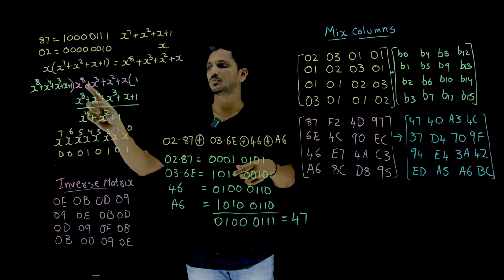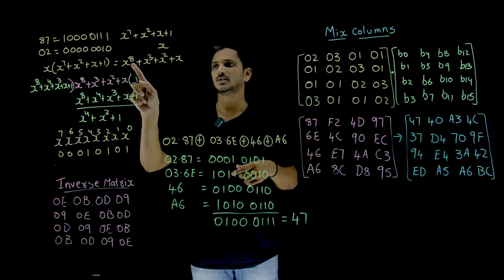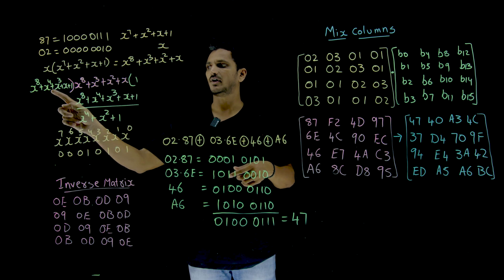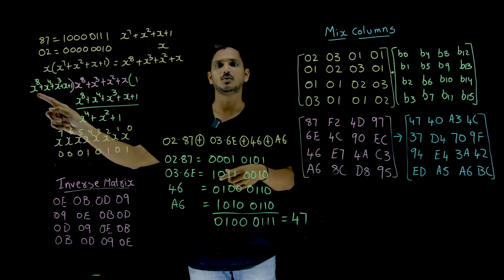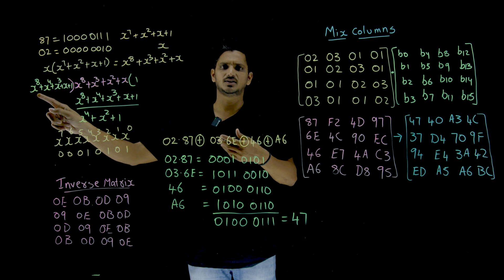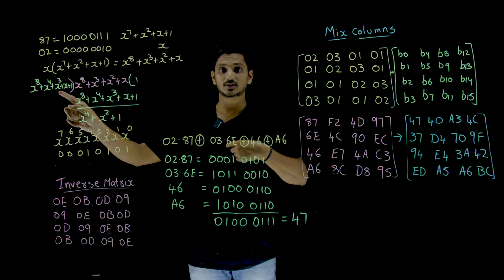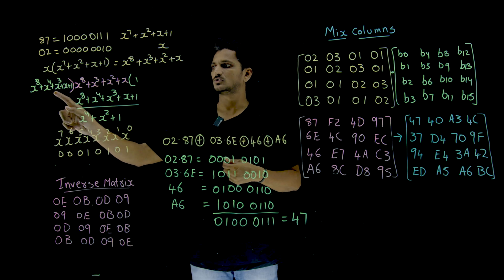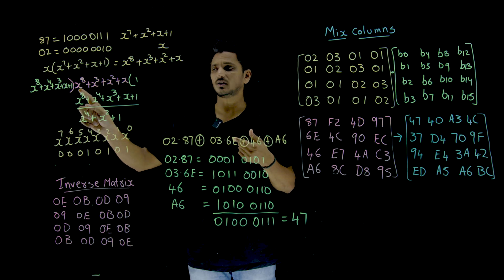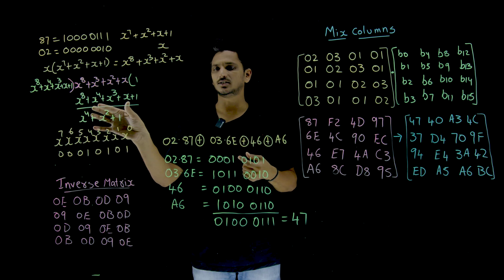The irreducible polynomial X power 8 plus X cube plus X square plus X, divided by this is the irreducible polynomial. These things, this irreducible polynomial, which we discussed in our last class. So, X power 8, X power 8. If you want to do division, take this as it is. In order to take this as it is, multiply by 1.